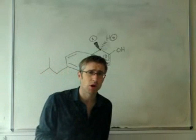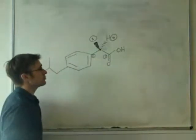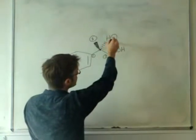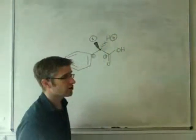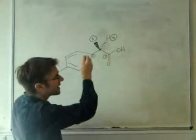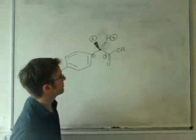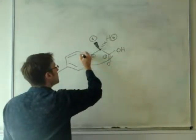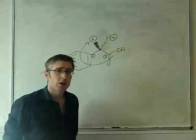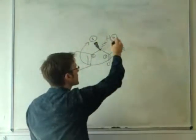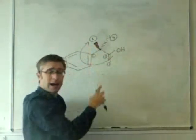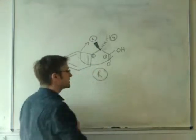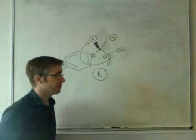We then have to orient the molecule so that the lowest priority group is pointing away from us. We're lucky, with the hydrogen as number four, the lowest priority, it is pointing away from us. We then look at the groups one, to two, to three, and we draw an arrow going in that order. You'll see that the arrow here is going clockwise, it's a right-handed turn, and we therefore describe that as the R enantiomer of ibuprofen.